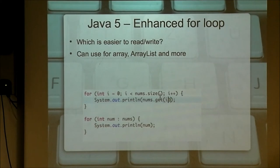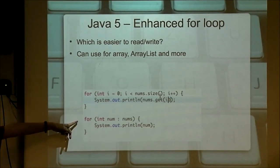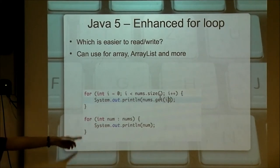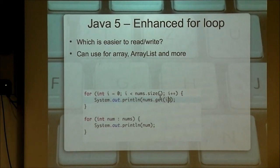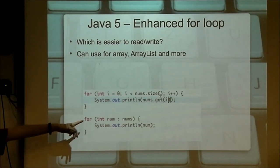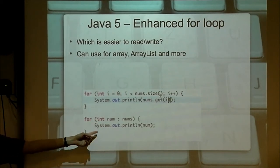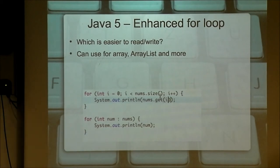Starting with Java 5, this is all you need to write. If you know any other languages, they already look like this. It just says: loop through this, store each element in the variable, and do whatever with it. It's a lot shorter, and more importantly, it's a lot harder to get wrong.